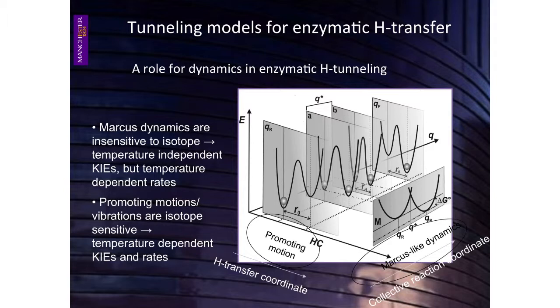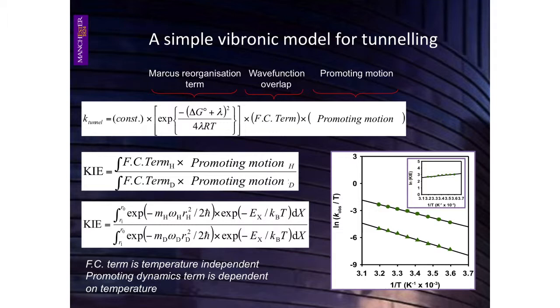The rate constant for hydrogen transfer is related to a reorganizational term, a wave function overlap term, the Franck-Condon factor, and this contentious promoting motion. In our experiments, unlike in the electron transfer field, we're using isotope effects, and many of these terms are isotope insensitive. So in the KIE expressions, the Marcus reorganizational term is independent of the isotope effect and cancels out, and the electronic coupling matrix element is wrapped up in a constant term. We can see that the KIE can have a temperature dependence as a result of this promoting motion term — that's the temperature dependence we can use to model data.